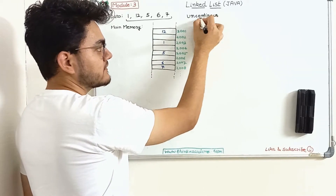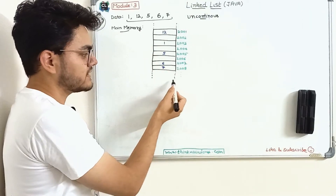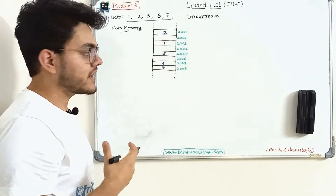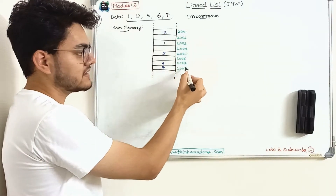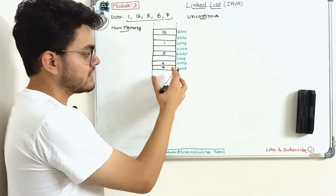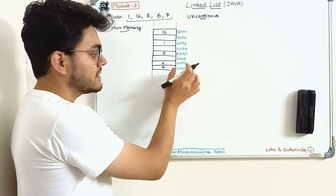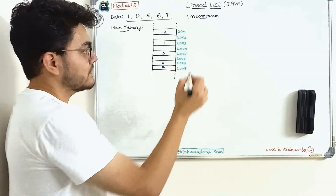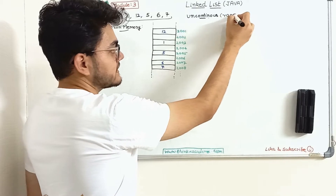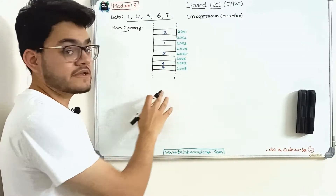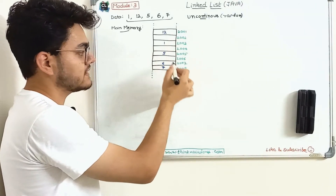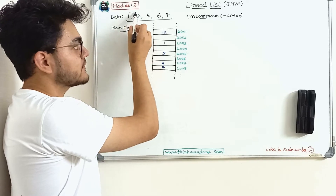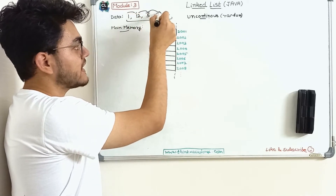Here you can see a structure of main memory which I have drawn. The dotted lines mean that the main memory is actually very large and we are just considering a chunk of it. I have assigned in green the memory addresses of each block, because every single block in the main memory has a particular memory address. This data is allocated at random locations inside the main memory — it is uncontinuous and stored at random locations.